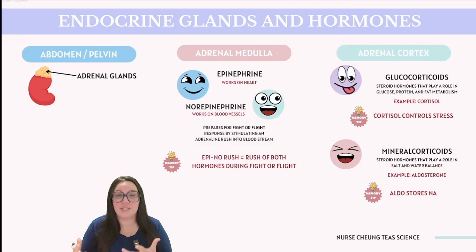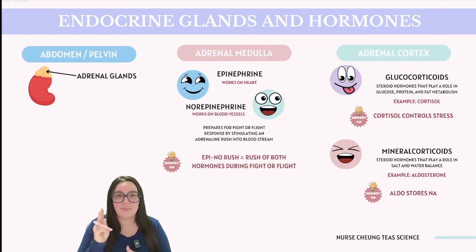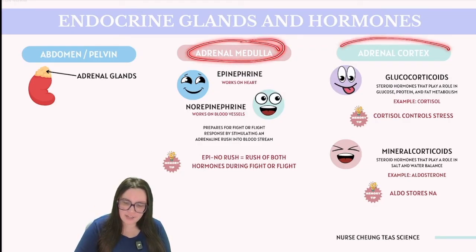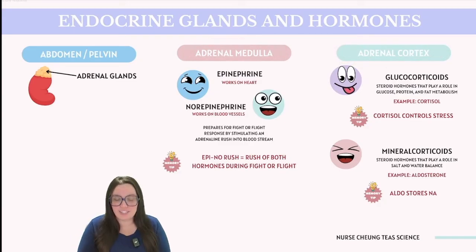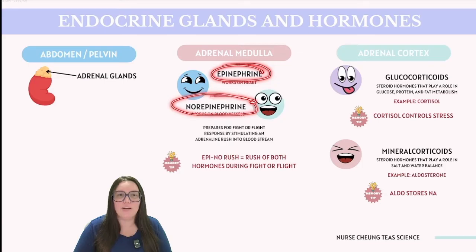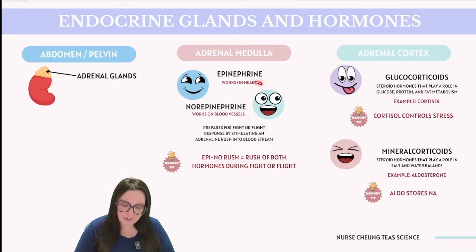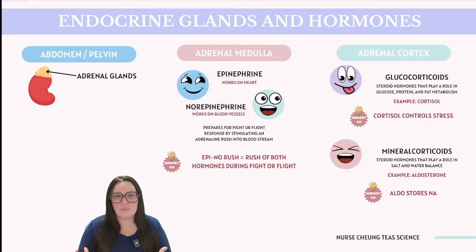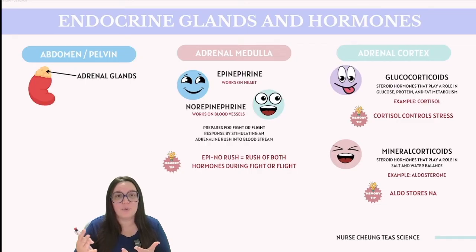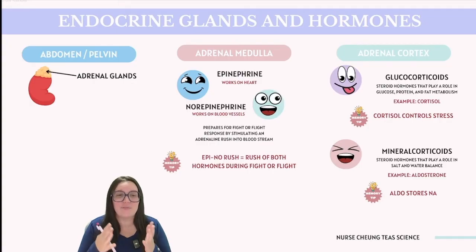Next, let's examine the adrenal glands, which are situated above our kidneys. These glands are comprised of two distinct parts: the adrenal medulla and the adrenal cortex. The adrenal medulla secretes epinephrine and norepinephrine, which are hormones crucial for initiating the fight-or-flight response during stress. Epinephrine primarily influences the heart, while norepinephrine works primarily on our blood vessels. I like to remember this with the mnemonic epi-no-rush, where epi stands for epinephrine, no stands for norepinephrine, as it's essential to rush or burst out the energy needed for the fight-or-flight response.